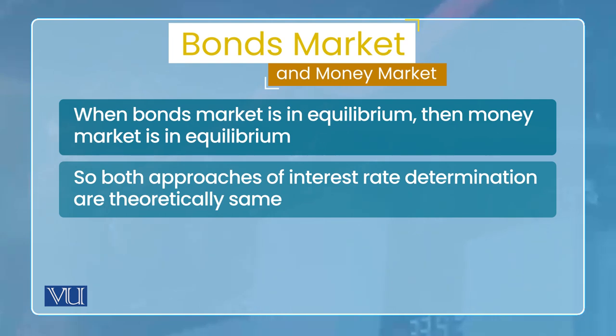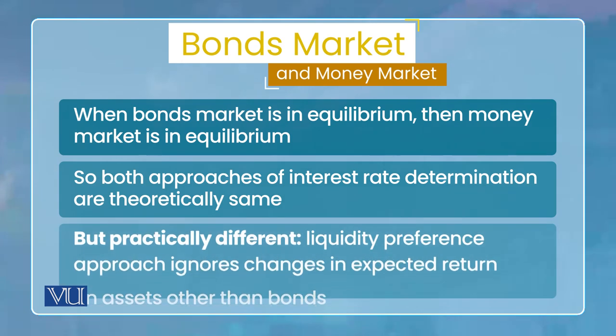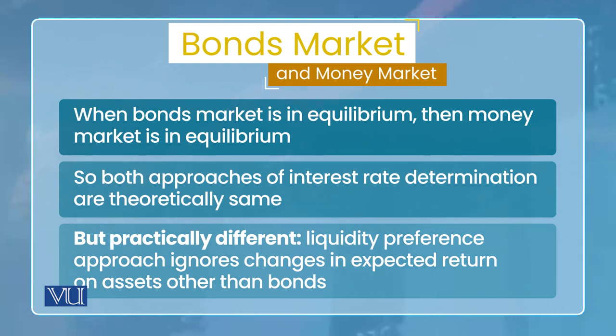Theoretically उनमें कोई basic difference नहीं है क्योंकि एक equilibrium में है तो दूसरा भी equilibrium में होगा। लेकिन practically जब हम देखेंगे कि कौन से variables interest rate को affect करते हैं — जैसे expected return change, money supply change — तो difference आएगा। जो liquidity preference theory है वो money का alternate सिर्फ bonds को लेती है, बाकी other assets को ignore करती है। जबकि bond market approach other assets में कई assets consider करती थी।